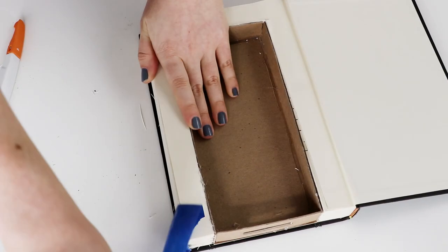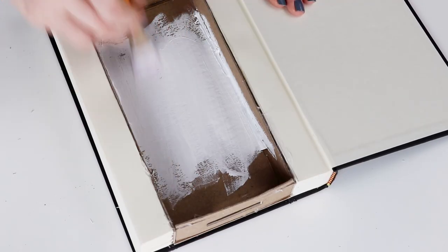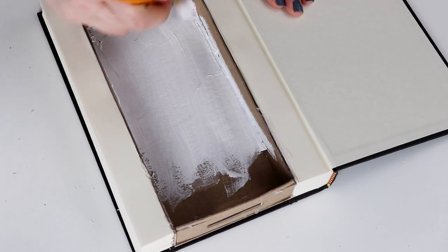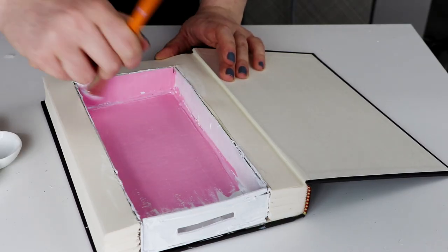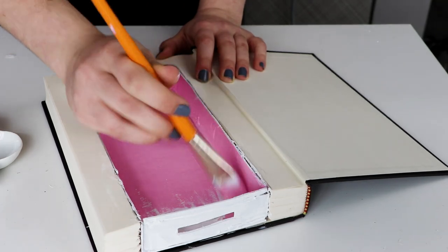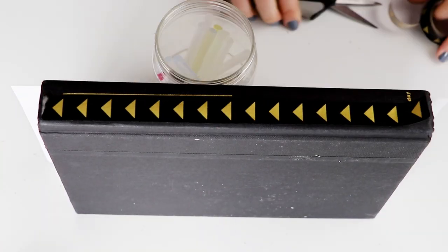Now our piggy bank is almost finished, so this is the fun part. It's time to decorate. Remove the tape from the edges and then use paint, washi tape, letter stickers, a label maker, anything you like to decorate your book bank.